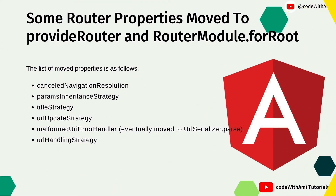Some router properties have been moved to provideRouter, replacing the RouterModule.forRoot() method. The list of moved properties includes: canceledNavigationResolution, paramsInheritanceStrategies, titleStrategy, urlUpdateStrategy, malformedUriErrorHandler, and urlHandlingStrategy. These are the properties that have been moved to provideRouter.